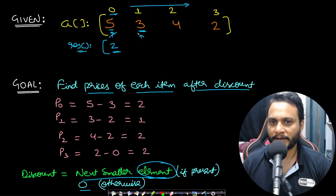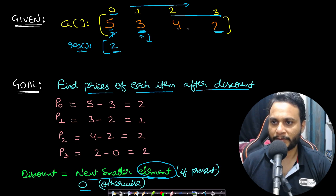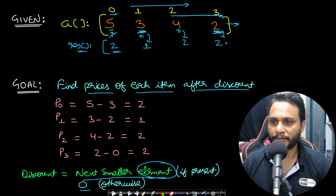Similarly for item 1 with price 3, we iterate from index 2 to the end and find the first price less than or equal to 3, which is 2. The final price of item 1 is 3 minus 2 = 1. For item 2 with price 4, the discount is also 2, so the final price is 2. For item 3 with price 2, there is no next smaller element, so no discount — you pay 2.